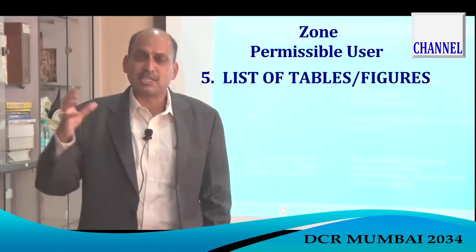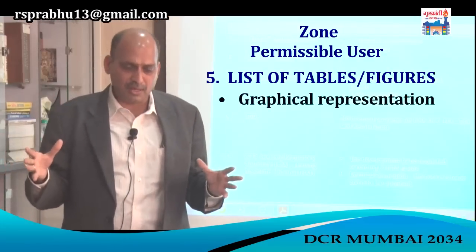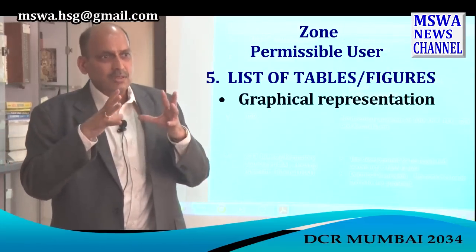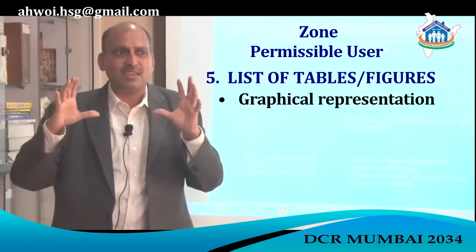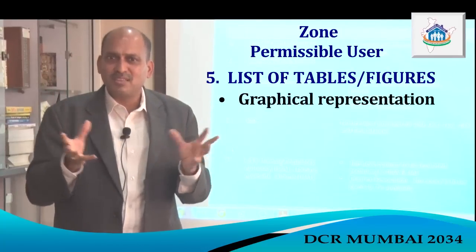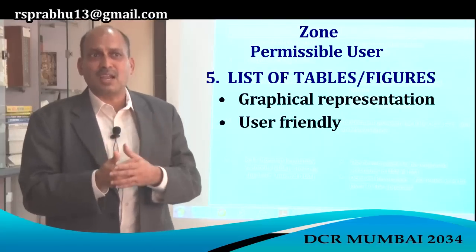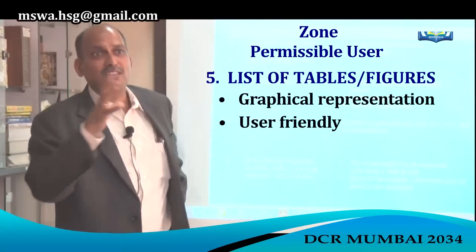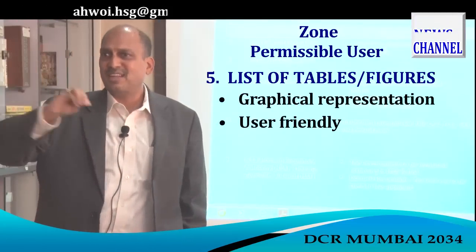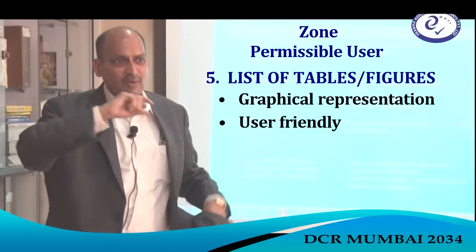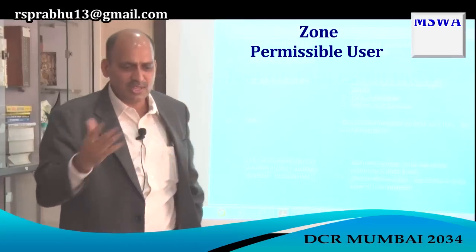Lists of tables and figures are also given — graphical, user-friendly representation. The drawings are made colourful and graphic so that one can understand what each colour or symbol represents: dotted lines show boundaries, railway marks use XXX or +++ symbols. These graphics help citizens understand the development plan easily.